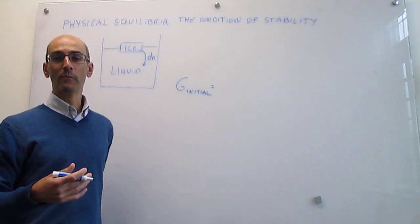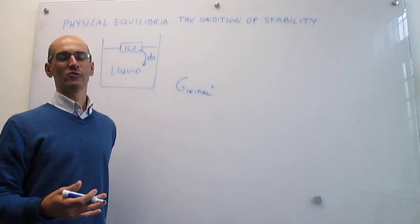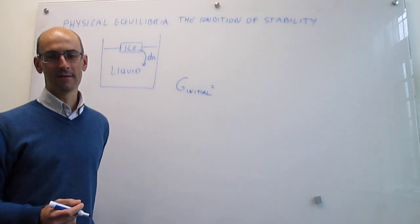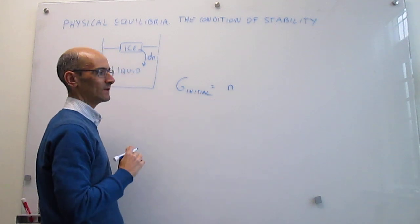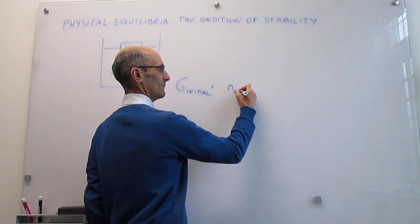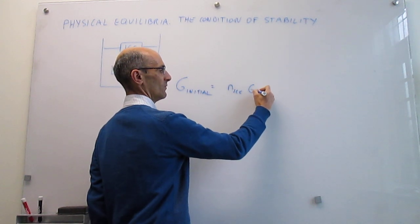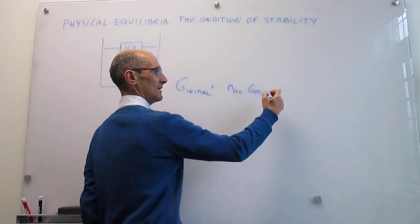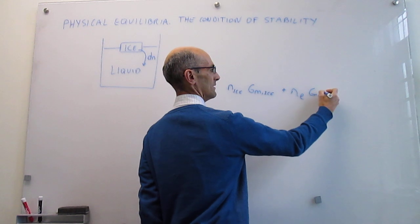We're going to be using molar quantities for the phases, which means that the total Gibbs energy of a particular phase is just going to be the product of the moles of that phase multiplied by the molar Gibbs energy of the phase. So to write that a bit better, this total Gibbs energy initially is going to be the sum of the molar Gibbs energies of the ice and the liquid — the moles of the ice times the molar Gibbs energy of ice, plus the number of moles of the liquid multiplied by the molar Gibbs energy of the liquid.